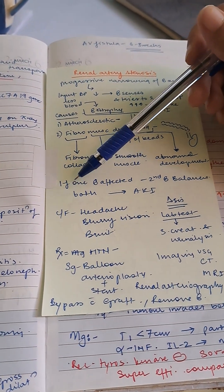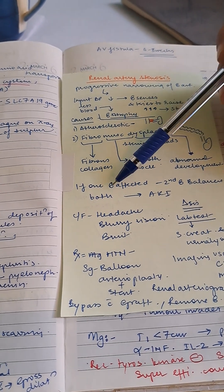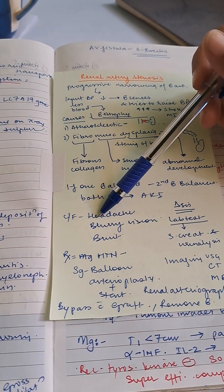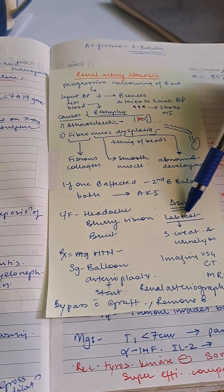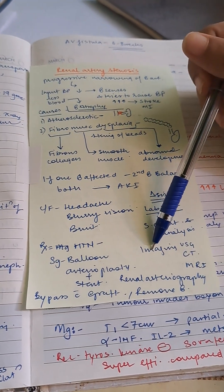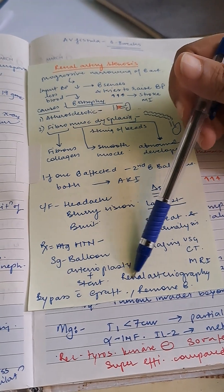If one kidney is affected, the second kidney balances it out, but if both kidneys are affected, there will be AKI. Clinical features include headache, blurred vision, and bruit. Diagnosis involves lab tests with serum creatinine and urinalysis, imaging with USG, CT, MRI, and renal arteriography.